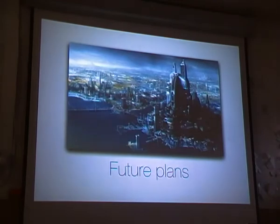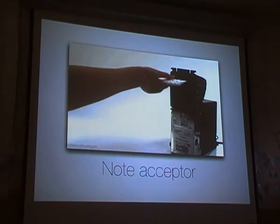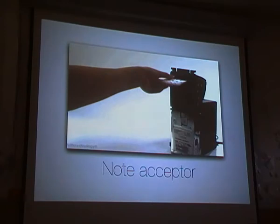That brings us to future plans. The next thing to be implemented is the note acceptor — this will be within a month, and then we can accept up to 250 euro bills. The coin acceptor is already in there, but it's not really convenient since not everybody has more than one or two euros on them, and if you want to buy pizza with Bitcoins, it's just not enough. So this will be soon.